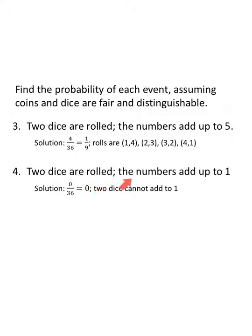If two dice are rolled yet again and the numbers add up to one, well, the lowest on any single die is one. And if I add it to another one, one plus one makes two. Two dice cannot add up to one. So that's zero out of 36. Here's an impossible event. Not going to happen.